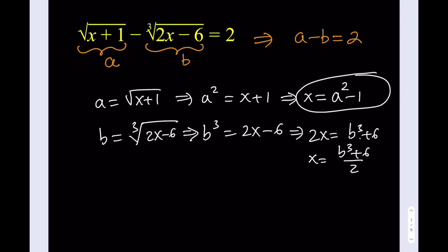So what's so good about getting x in terms of A and B separately? Well, if two things are equal to the same thing, and I've said this before, if two things are equal to the same thing, then they're equal. So that means that these two quantities are equal to each other. Beautiful. Let's go ahead and write that down. So we get B cubed plus 6 over 2 equals A squared minus 1.